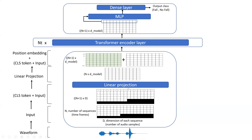Then I do a linear projection — basically changing the dimension of the input. I change it from N+1 by D to N+1 by D-model. Then we do positional embedding. The reason I'm glossing over the details of the CLS token and positional embedding is because they are part of the transformer model. If you're not familiar with the transformer model, I do have videos on my channel — feel free to watch those to understand why I'm doing things like positional embedding and the CLS token.